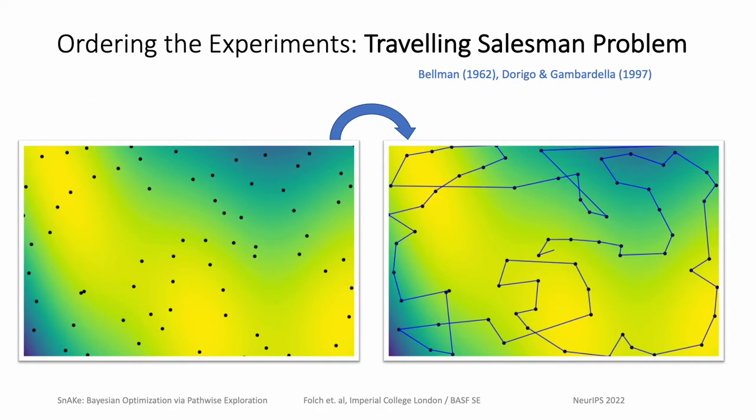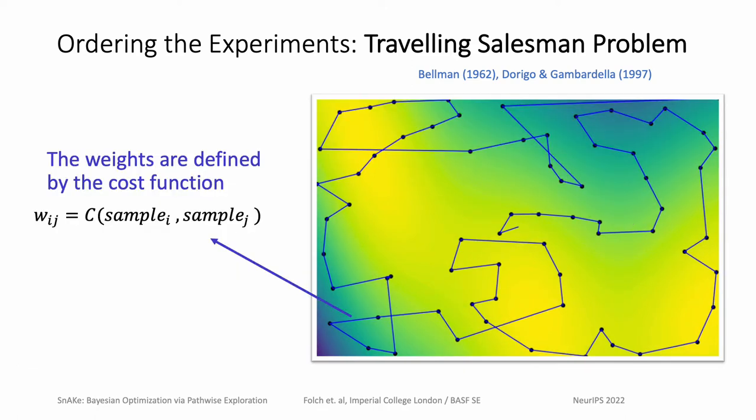Once we have selected all experiments, we need to decide on an ordering that makes the input cost as small as possible. This is equivalent to solving the traveling salesman problem on a fully connected graph, where every experiment design is a node and the weight of every edge is the cost of moving from one design to the next. Solving this problem is NP-hard, but it can be done quickly using approximation methods.